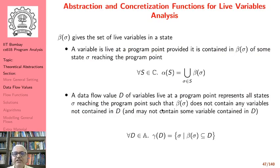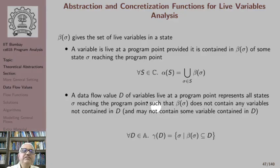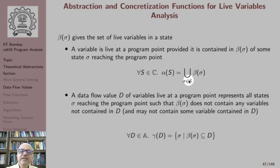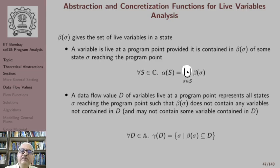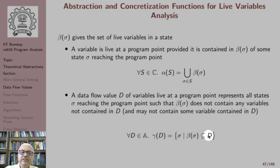We can similarly define abstraction and concretization functions for live variables analysis. Beta(sigma) gives the set of live variables in a state. The abstraction function alpha(S) is the union of beta(sigma) for each sigma in S — because it is sufficient for the variable to be live along just one path. Note that the abstraction function for available expressions analysis used intersection. Similarly, the concretization function for live variables chooses states sigma such that beta(sigma) gives a subset of the data flow value D, since D may have spurious inclusions of variables.